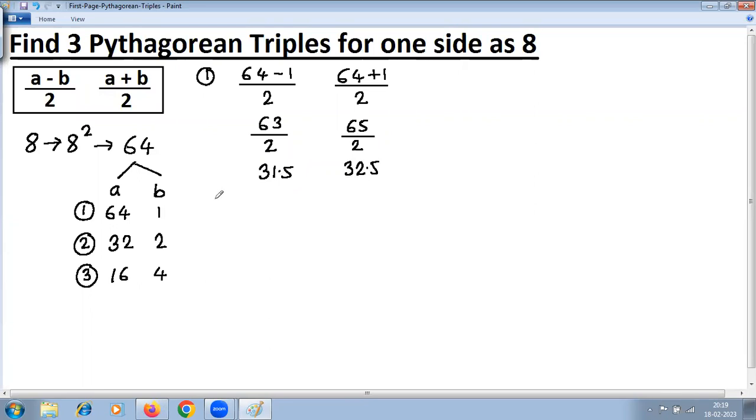With this, we've got first triple: that is 8, 31.5, 32.5.